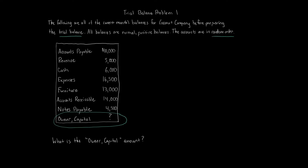One acronym that can help you here is DEALOR — D-E-A-L-O-R. We normally use DEALOR to tell us which side these account types increase on. D is for drawing or withdrawals, E is for expenses, A is for assets — those increase on the left, debit side. Then L is liabilities, O is owner's equity or capital, and R is revenue — all increase on the right, credit side.